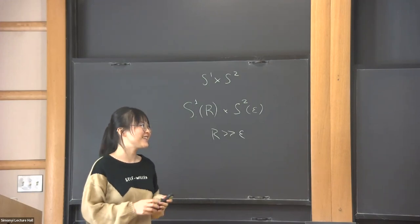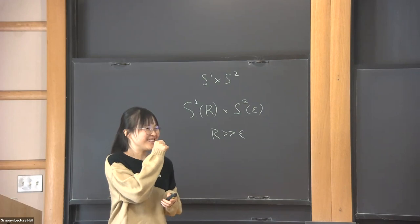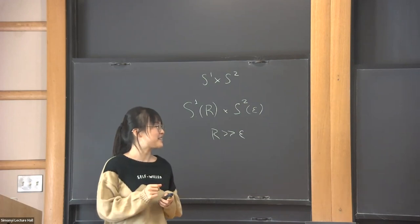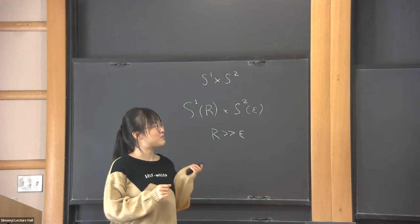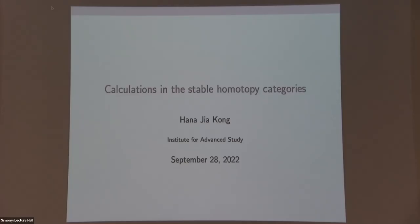Thank you for introducing me. My title is very general because the due date was too early and at that time I hadn't decided what to talk about. Now I do. More specifically, what I'm going to talk about is some approximation to the stable homotopy groups of the sphere and its motivic analog.